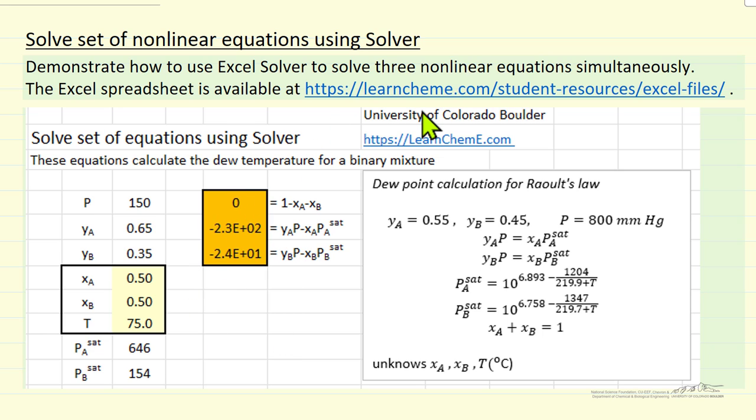And then what we're going to do is go into solver and get these as close to zero as we can. So let's look at the spreadsheet to see how we do this.